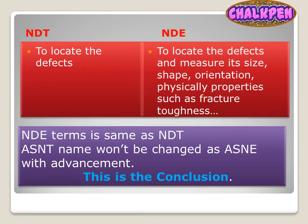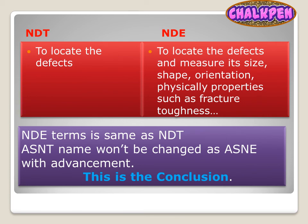Technically, NdE is used to describe measurements that are more quantitative in nature. NdT is said to only locate defects, whereas NdE is used to locate defects as well as measure their size, shape, orientation, and physical properties such as fracture toughness and formability. It depends on the company's willingness, as there is not truly a fundamental difference between NdT and NdE.